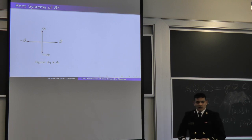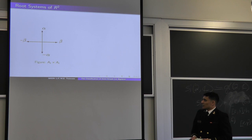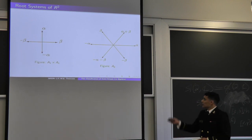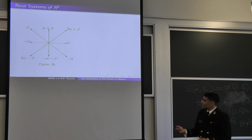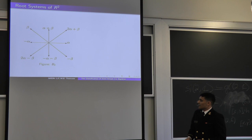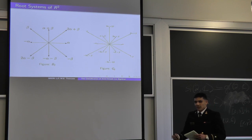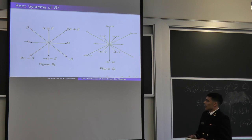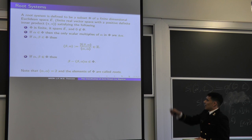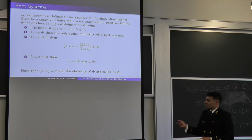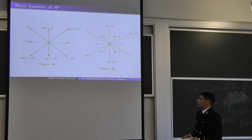We can see this when we define all the root systems of R² with the Euclidean inner product. Starting with α and β orthogonal, we get type A₁ × A₁. If α and β are the same length, we get A₂. If β is related to twice the length of α — meaning ⟨β, β⟩ = 2⟨α, α⟩, or equivalently the angle between the two roots is 3π/4 — we get B₂. And the last one is G₂, where the angle between the roots is 5π/6. Those are the only root systems for R².